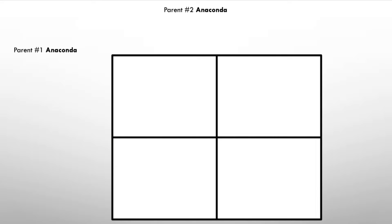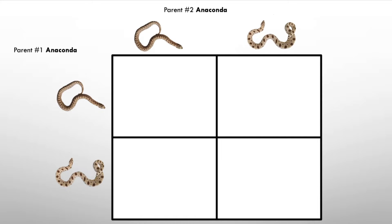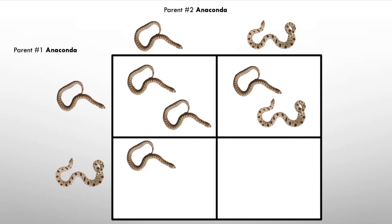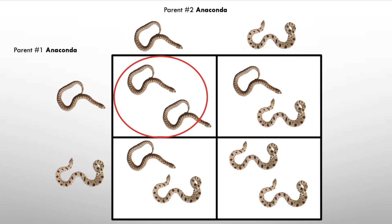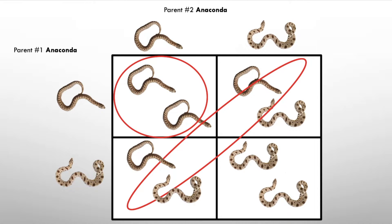Next combination: both parents have one copy of the anaconda gene. The results are: 25% normal pattern, 50% conda with reduced pattern, and 25% super conda — totally patternless — because it has two copies of the anaconda gene. So if you breed an anaconda to an anaconda, 25% are going to be super condas.